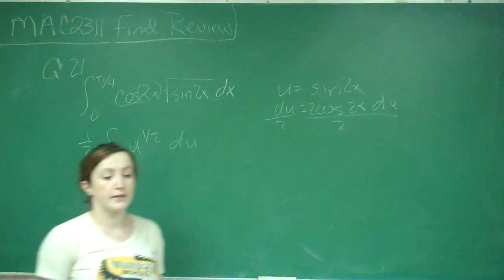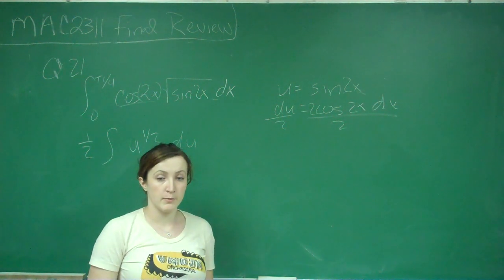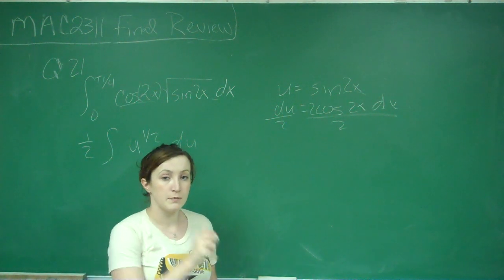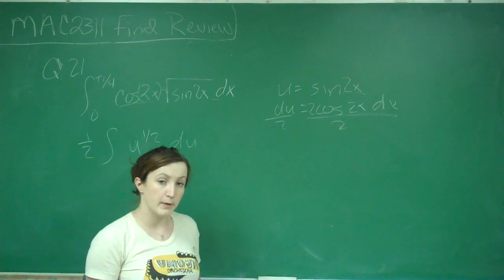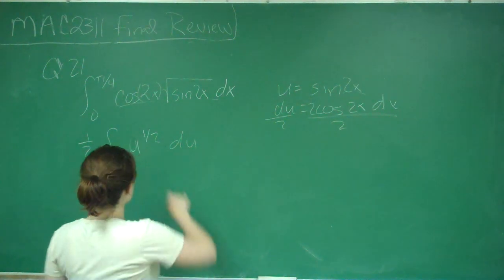And I go ahead and change my bounds at the very beginning. If you decide to keep your bounds from 0 to pi over 4, you have to go back and plug in sine 2x for u, but it's a little bit simpler when you do it here.